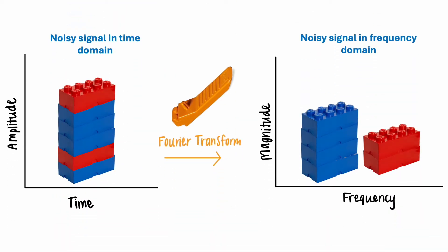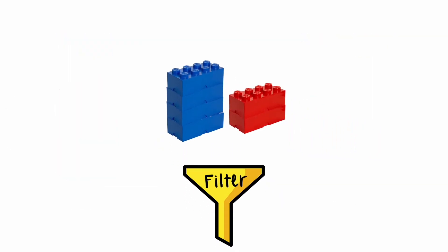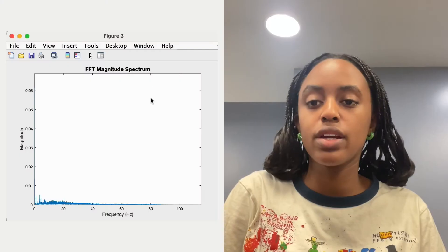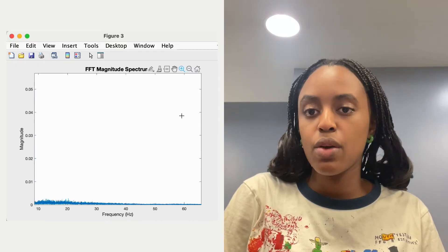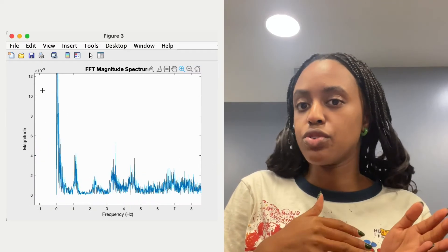You can think about this as kind of breaking a Lego set into its individual pieces, and once we do that, we can devise filters to remove the pieces we don't want and then rebuild the signal. When we take the Fourier transform of our signal, we get a graph that looks like this. We can see that our signal is largely composed of frequencies less than 100 Hz.